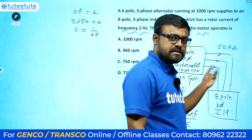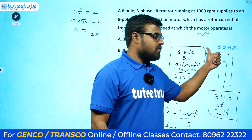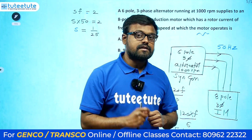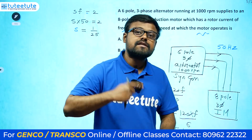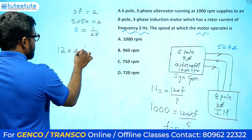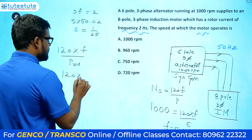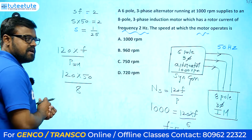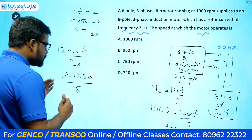When we give the 50 Hz supply to the stator of the induction motor, three-phase balanced currents flow in the three-phase winding, generating a rotating magnetic field. This rotating magnetic field rotates at synchronous speed, which is Ns = 120F / P = 120 × 50 / 8, where 8 is the number of poles of the induction motor.